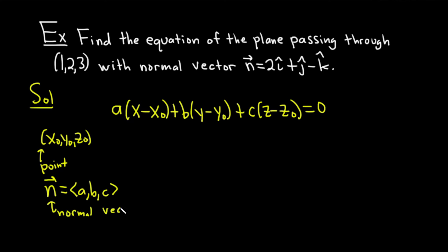So normal vector. Basically, it's perpendicular to your plane. So to find the equation of a plane, you just need two things. You need a point on the plane and a vector perpendicular to it. In this problem, we almost have everything. Well, actually, we do have everything, not almost.